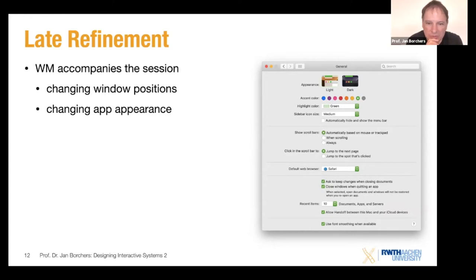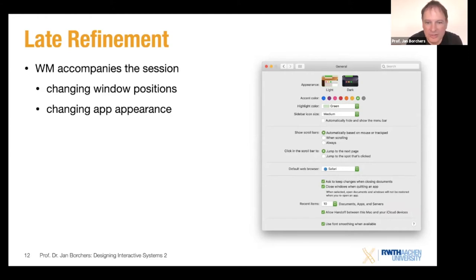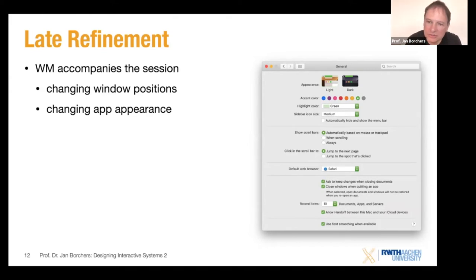When an application developer writes an app, they don't have to think about implementing the user interface controls for minimizing, maximizing, or even resizing the windows — they just have to say they want them. Sometimes you may not want them; a dialog box you don't want people to resize. But in general, you don't have to implement any of these. You just tell your window system to have the window manager decorate these windows for you.